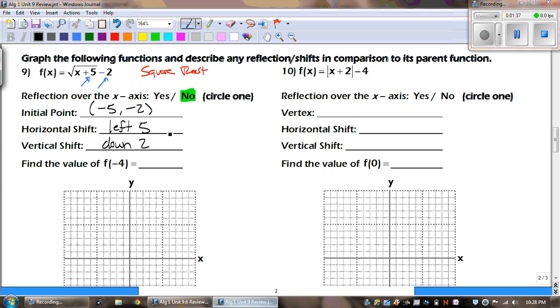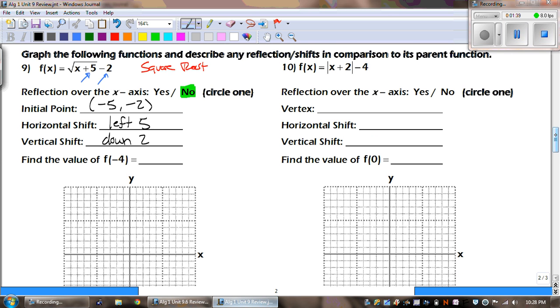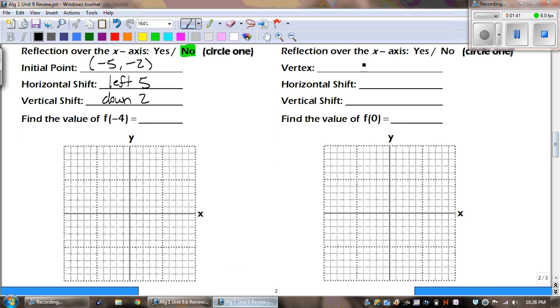So, before we find the value, we actually have to graph this. So, the initial point told us to go left 5 and down 2. And then we have to follow the pattern. The pattern is up 1, right 1, up 1, right 3. And there we go.